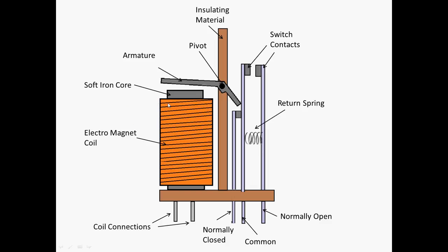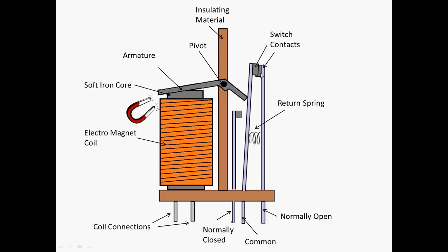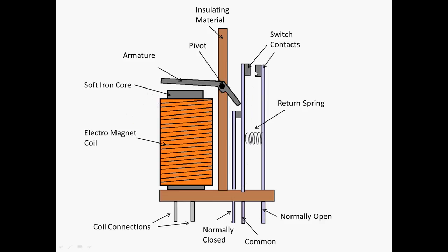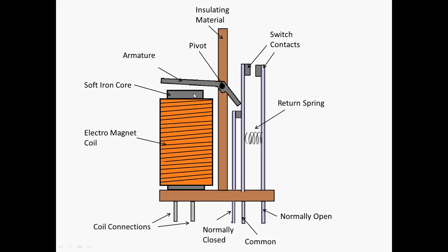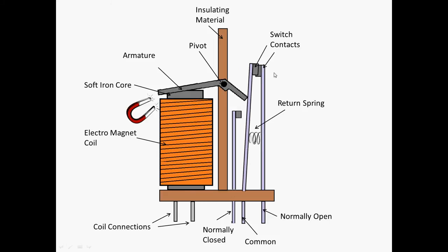And as you see from my rather dodgy PowerPoint animation, as it pulls this end down, because there's a pivot here, this end pushes up and joins those connections together. So if you have another circuit hooked up to these two legs, you've made a switch here, that's activated by a magnet. So you've got one circuit on the left, controlling another on the right, only through magnetism.